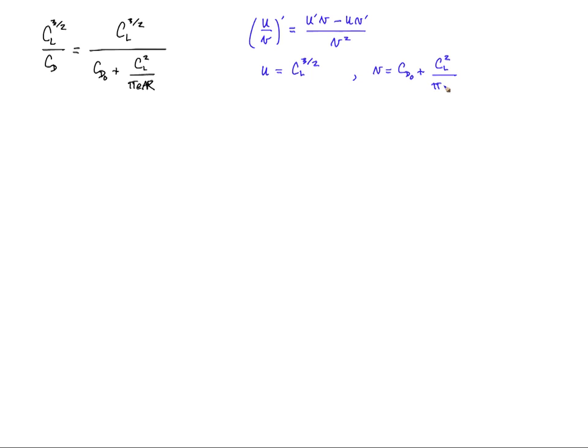Remember we're taking derivatives with respect to CL. Another formula you need to know: the derivative of u to alpha power is alpha u to the power alpha minus 1. So u prime is three halves times CL to the three halves minus 1, so to the one half.